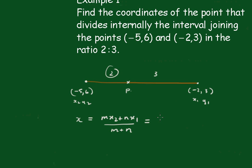So that's 2 times -2, plus now this one, 3 times -5 over 2 plus 3.